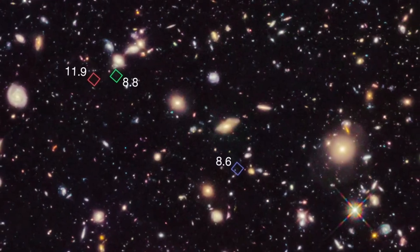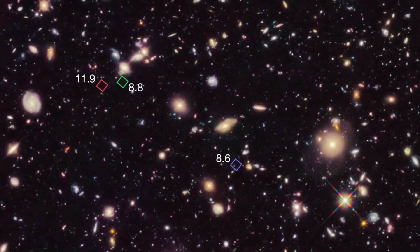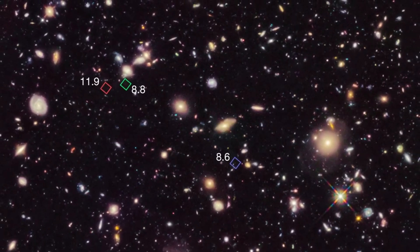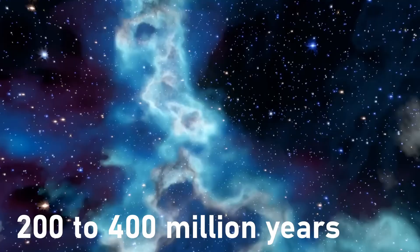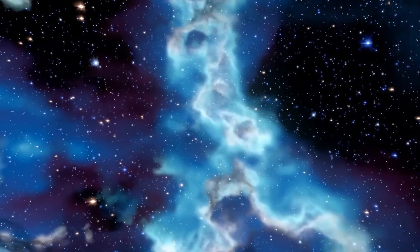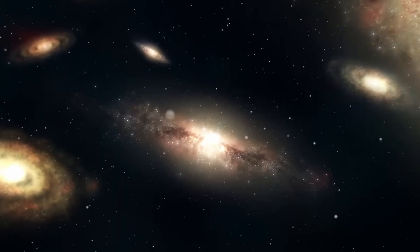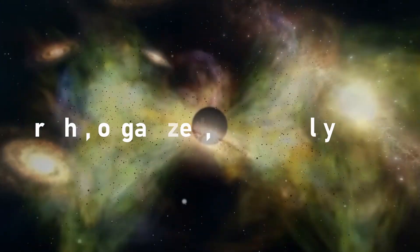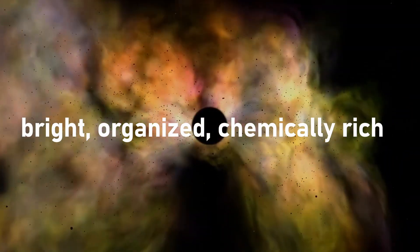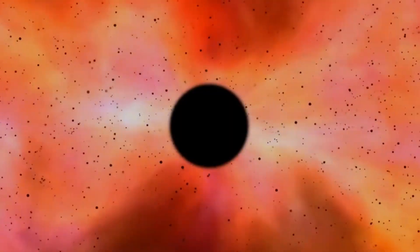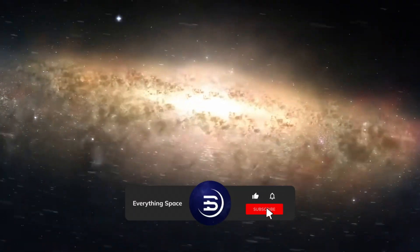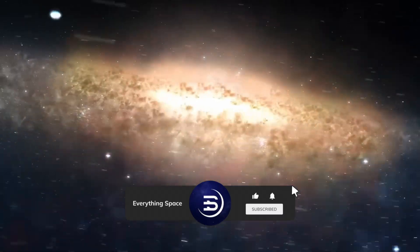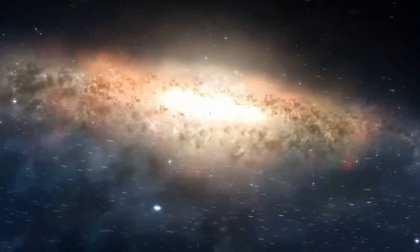Across its deep fields, scientists found not one, but hundreds of surprisingly massive galaxies, existing just 200 to 400 million years after the supposed beginning. These galaxies weren't dim and tentative. They were bright, organized, chemically rich. Shockingly so. Some appear to contain enough stars to rival the Milky Way, though they formed when the universe was less than 3% of its current age.